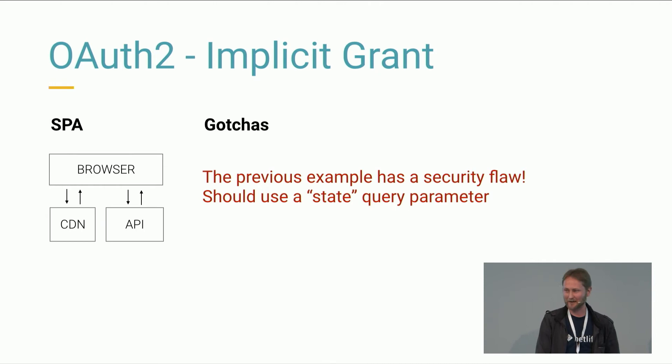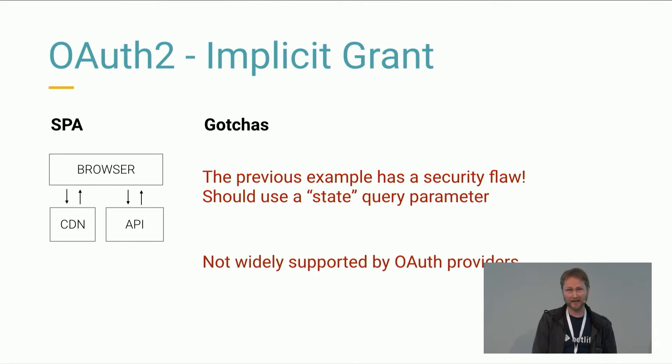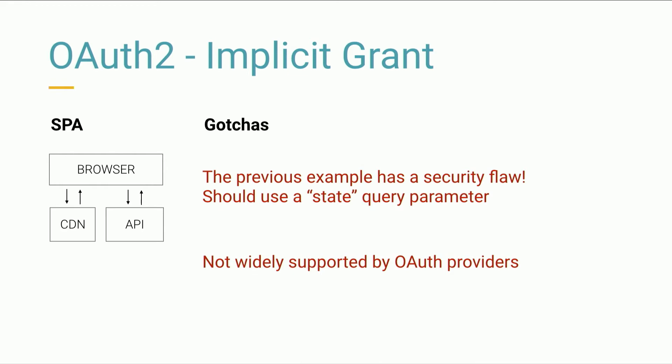The other main limitation is that the Implicit Grant isn't widely supported. Google supports it in some APIs, but GitHub, Twitter, Facebook, and most others don't support this flow. That limits its use, which is a shame because it's so handy — you can use these APIs without any hidden database or secrets.